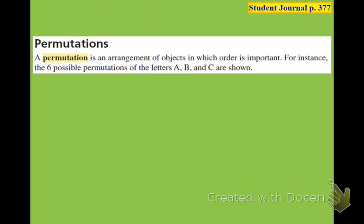So we're going to begin: permutation. You'll want to write this down. A permutation is an arrangement of objects in which the order is important. A word you want to know with permutation is arrangement. This is Student Journal, page 377. We'll be in the Student Journal predominantly today.